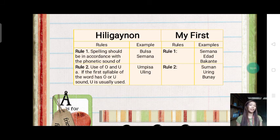In Hiligaynon, the example here is ungpisa and uling. Nandiyan sa first syllable ang sound na u at u. I have here some examples for us to understand better the rule, the word suman.